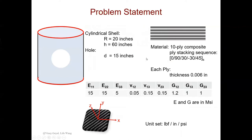Here comes the problem statement. The geometry we are going to study today is a cylindrical shell whose radius is 20 inches and the height is 60 inches, with a hole of diameter 15 inches in the center of the cylinder. The material of the cylindrical shell is a 10-ply composite plate. The ply stacking sequence is 0, 90, 30, minus 30, and 45 degrees, and is symmetric.